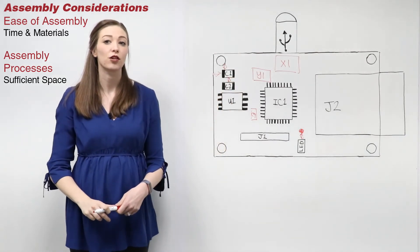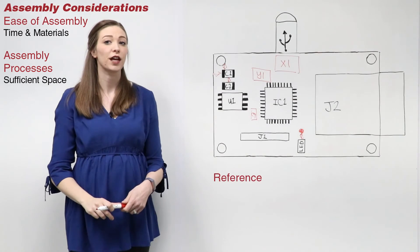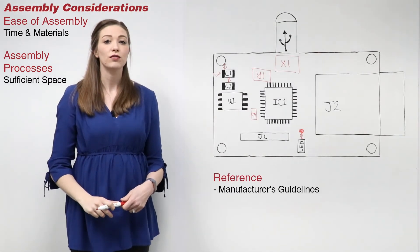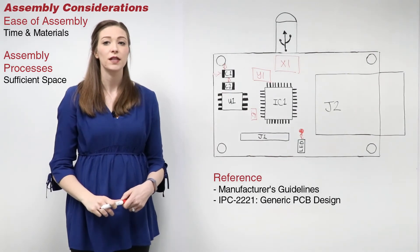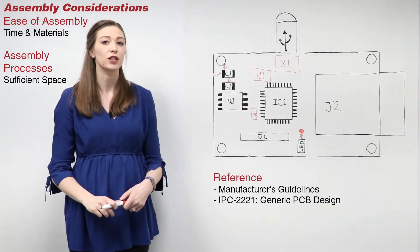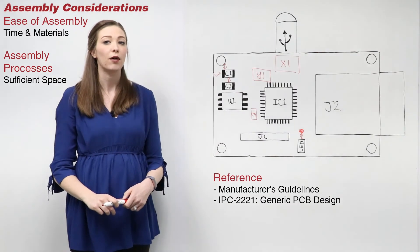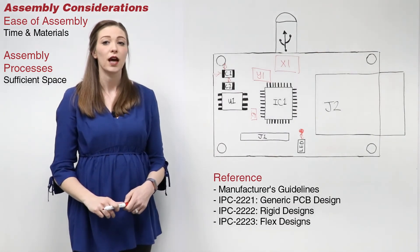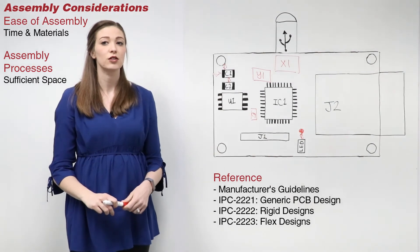Many manufacturers have their own guidelines to assist in creating a PCB that is easily assembled. You can also reference the IPC standard documents. IPC 2221 is for generic PCB designs. However, for rigid designs, you can reference IPC 2222, and for flex designs, reference IPC 2223.